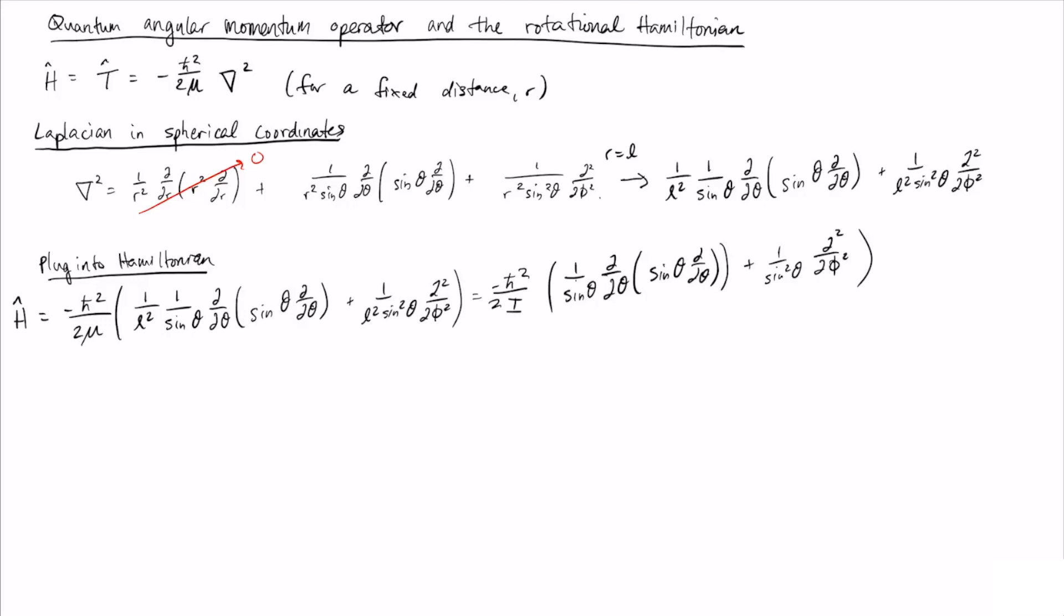Remember when we wrote this classically, we showed that the kinetic energy of a rotating particle can be written as l² over 2I, where l² is the angular momentum squared. So we look at this equation, and we compare this to what we have for l² over 2I.